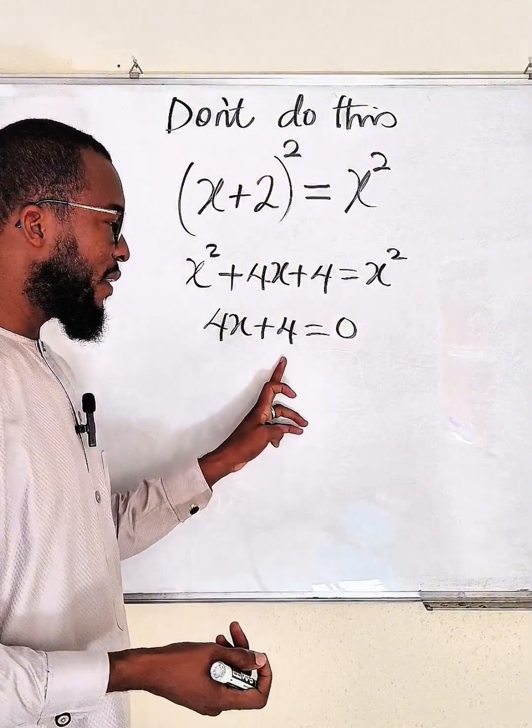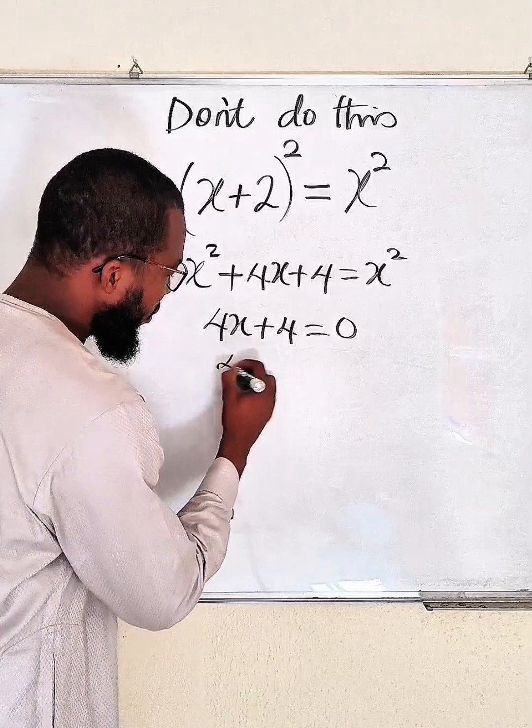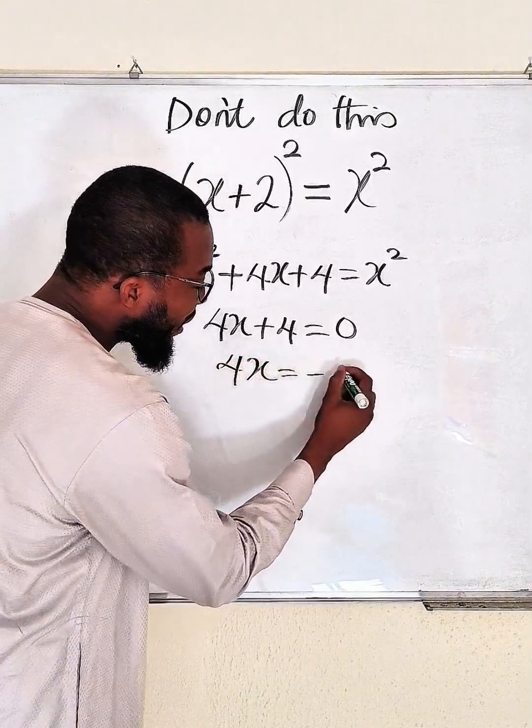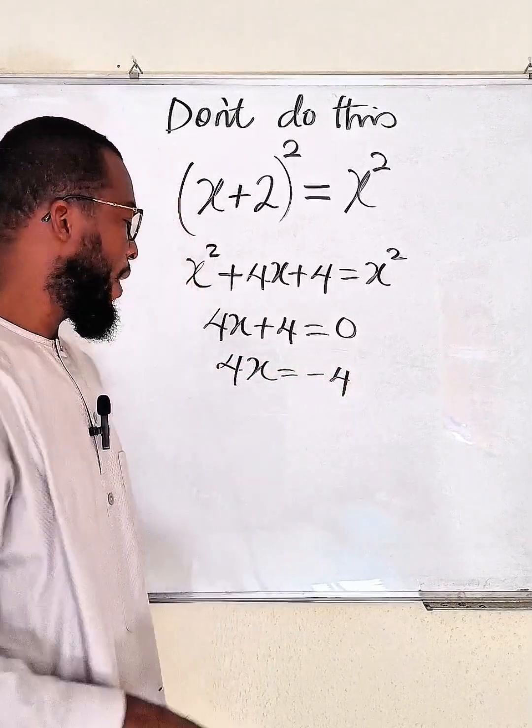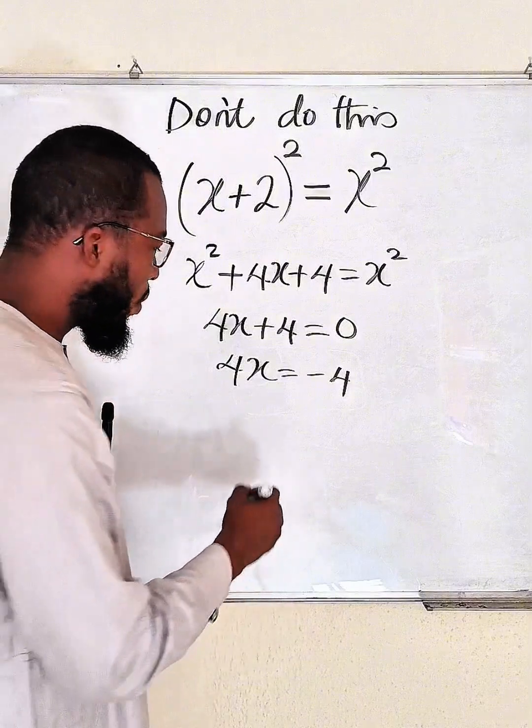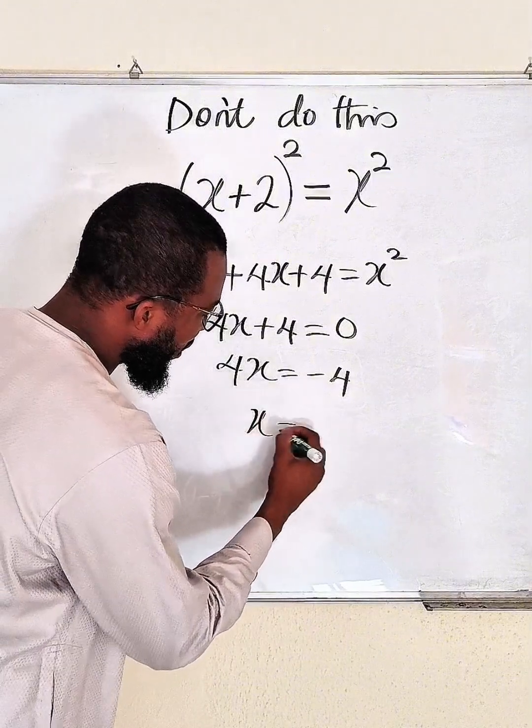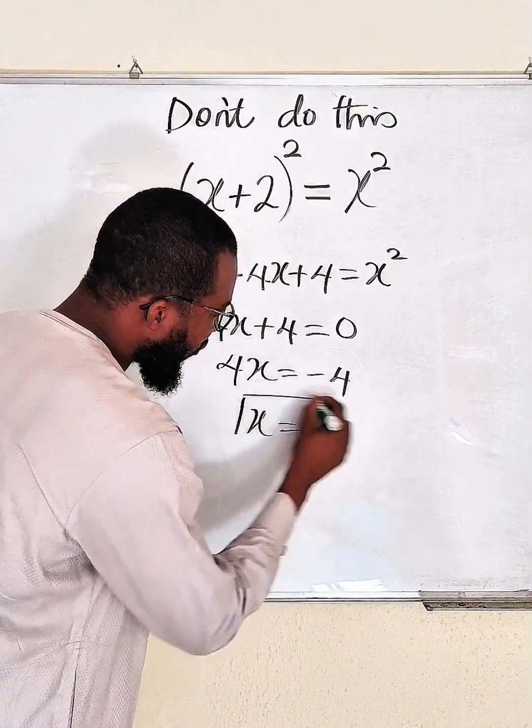Then you can take this to the other side. 4x will be equal to negative 4 as it crosses over. Then you divide both sides by 4. You have x to be equal to negative 1, and therefore negative 1 is the valid solution, x equal to negative 1.